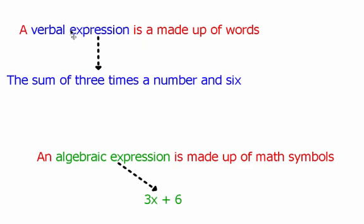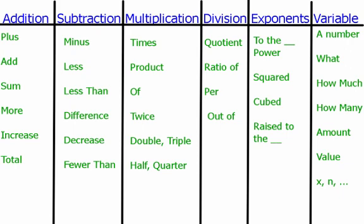How to translate from a verbal expression in English to an algebraic expression in math terms. To start, we're going to take a look at this table. This table gives you a list of common words that are used for a bunch of different math ideas. All of these words mean addition, these are subtraction, multiplication, division, exponents, and words that represent a variable such as x or n. What I'd like you to do right now is take a second, pause the video, and copy this down into your notes.